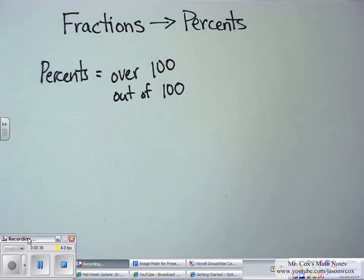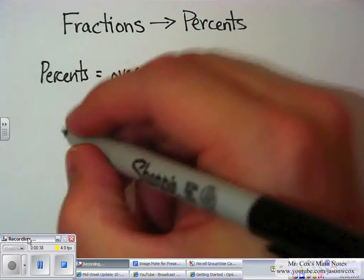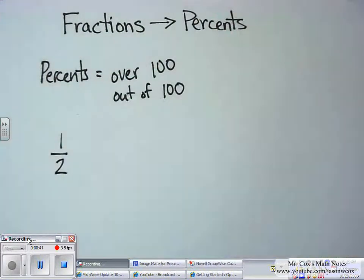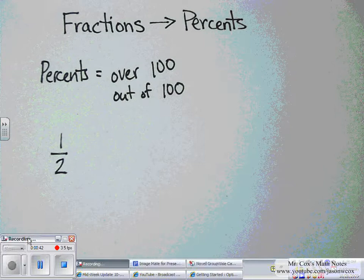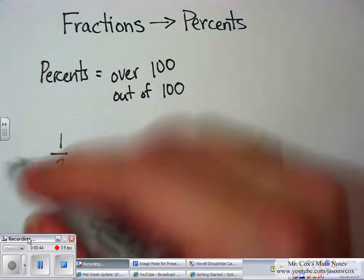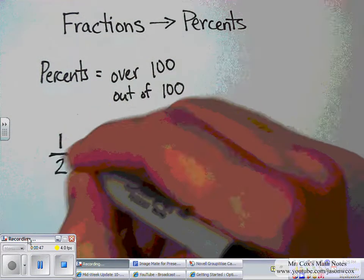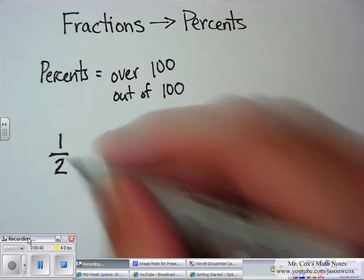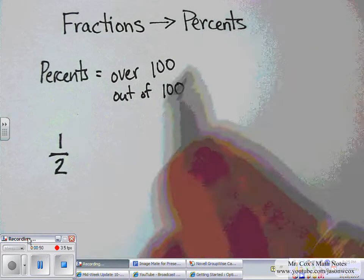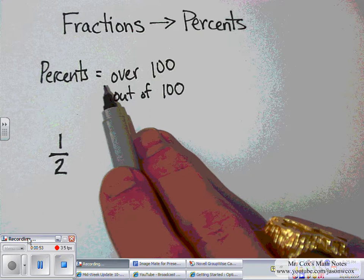So the first step is you have a fraction. Let's do an easy one — let's do 1 half. We've all seen that one before. Now, this is 1 out of 2, or 1 over 2. But that's not what percent means. Percent means over 100.